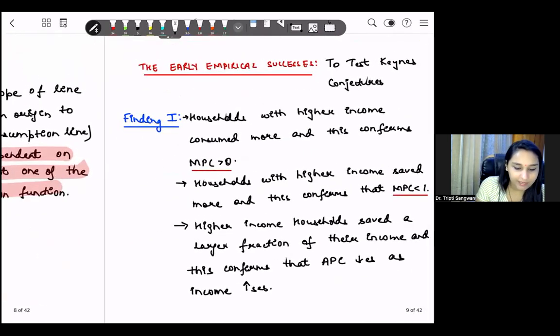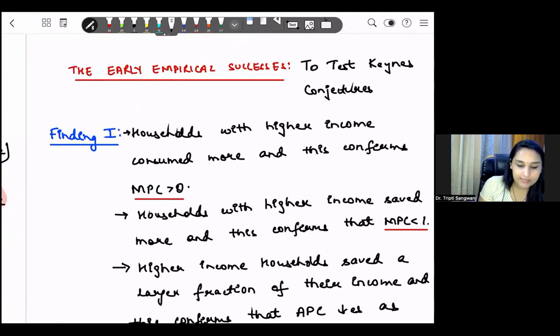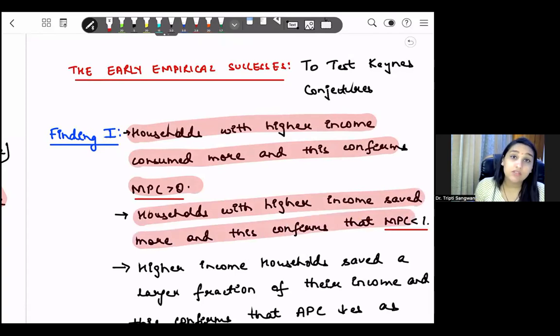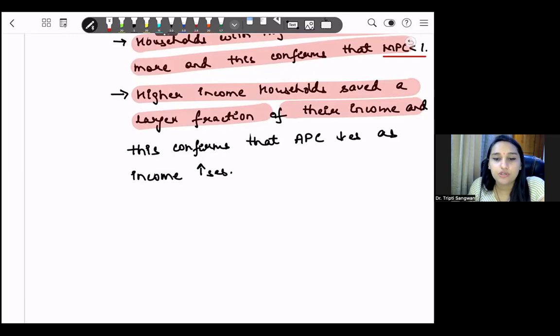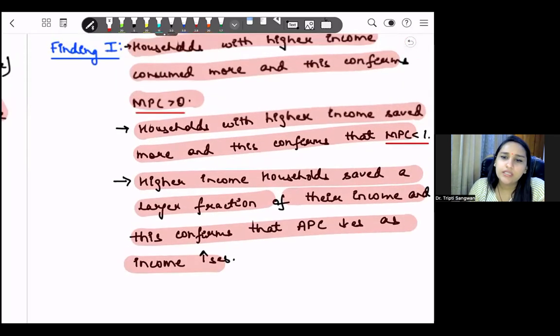Now we need to discuss about the empirical analysis to test the Keynes conjectures. So there is one finding where it says that households with higher income consumed more, and this confirms that MPC is greater than zero. Then there was another finding: households with higher income saved more, and this also confirms that MPC is less than one. So MPC lies between zero and one. Then it says that higher income households saved a larger fraction of their income. Remember, we discussed that saving is luxury. So those who have more income, they are saving a greater proportion of income. And this confirms that whenever our income increases, our APC reduces. So this was the first finding.